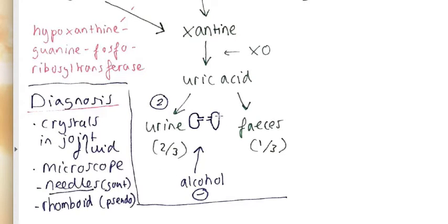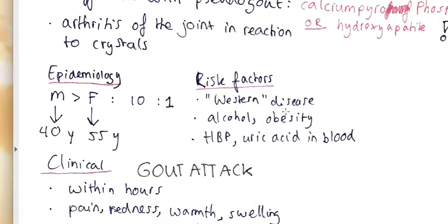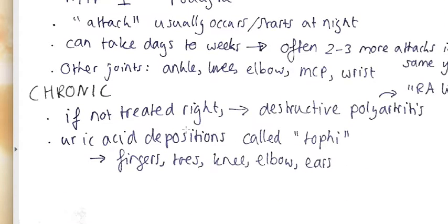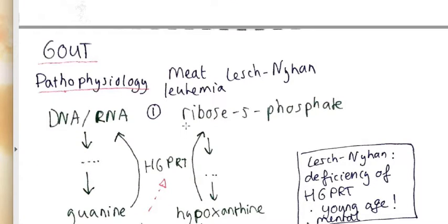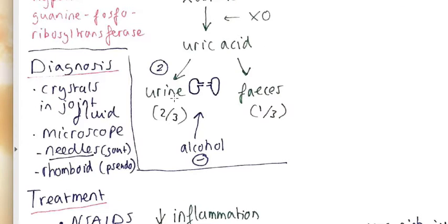What also is true is that alcohol inhibits the secretion of uric acid in the kidneys, so that's also important: alcohol is a risk factor. We knew that from over here. Obesity—these are all associated with cardiovascular risk factors and they are associated with renal failure.